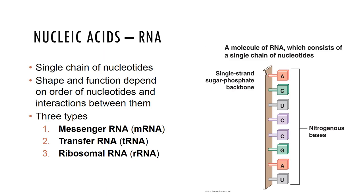There are different forms of RNA: messenger RNA, transfer RNA, and ribosomal RNA — the three varieties that carry out DNA orders for protein synthesis. RNA is single-stranded and has uracil as its base instead of thymine.